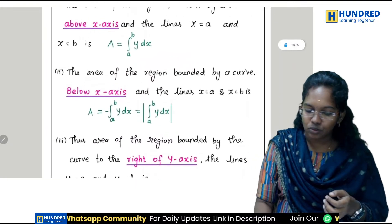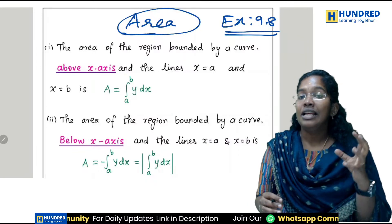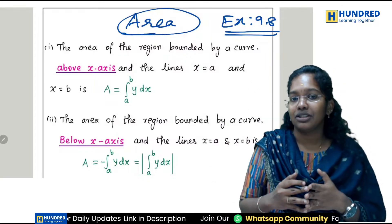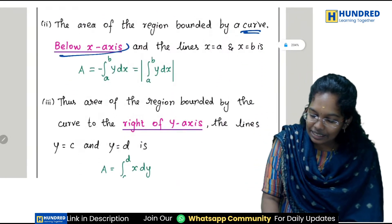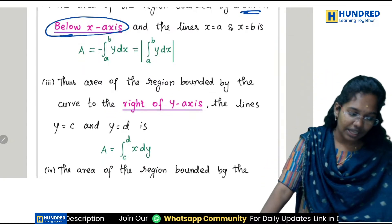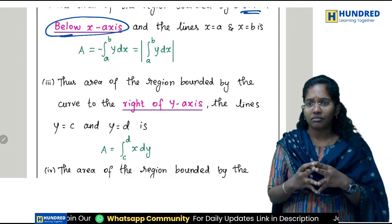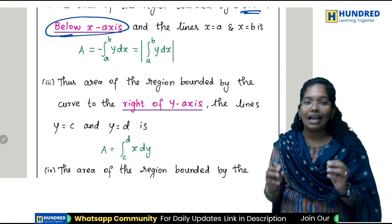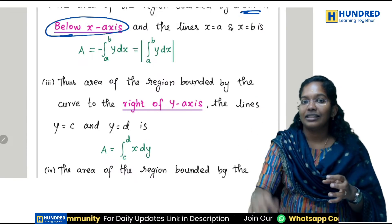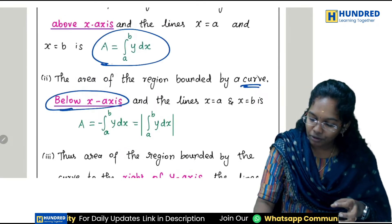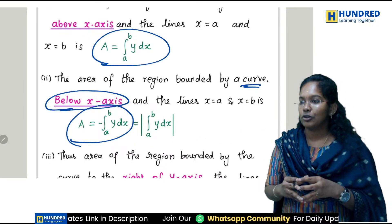In exercise 9.8, we talk about one curve above the x-axis. The formula is: area = integral from a to b of y dx. If the curve is above the x-axis, use the formula a to b y dx. If the curve is below the x-axis, use minus: area equals minus integral from a to b of y dx.